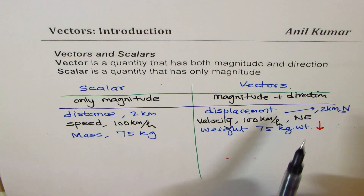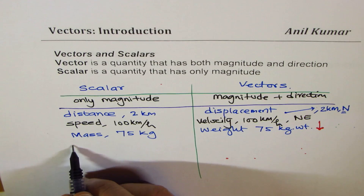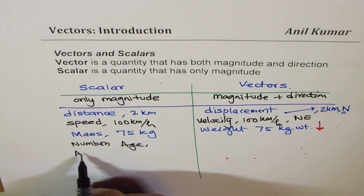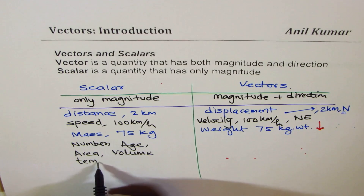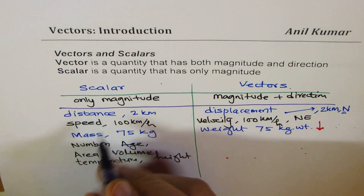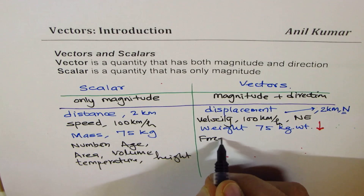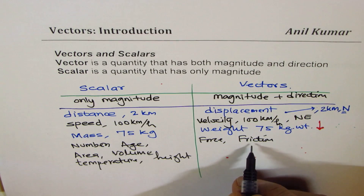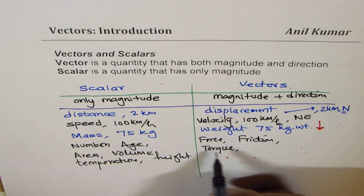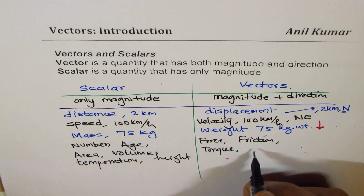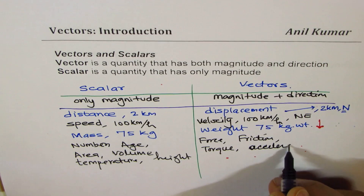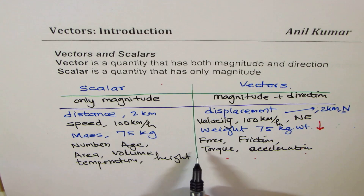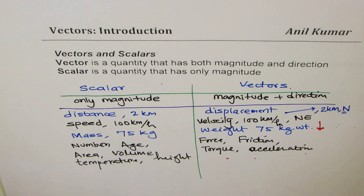Many quantities could be added to this list. All numbers, age, area, volume, temperature, and height are all examples of scalars. On the vector side, we could have force, frictional force, friction (which acts against the direction of movement), torque, velocity, and acceleration (rate of change of velocity). These all have both magnitude and direction.